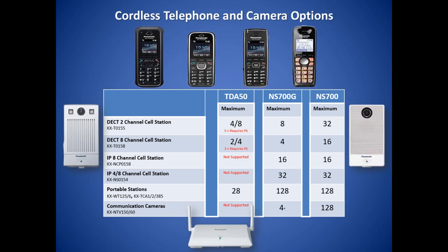The KX-NS700 and the NS700G also support communication cameras. The KX-NTV-160 is a communication camera that's rated for outdoor use and uses an IP proprietary telephone license that doesn't require a traditional door phone card and port.